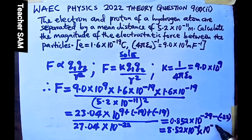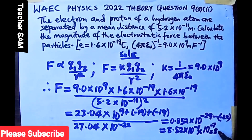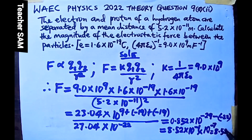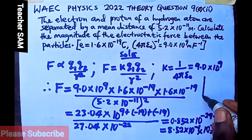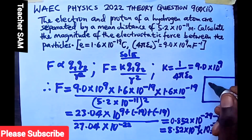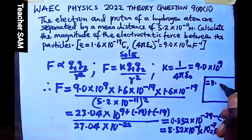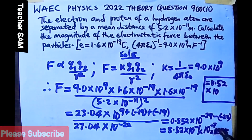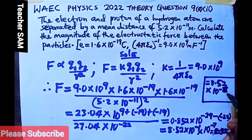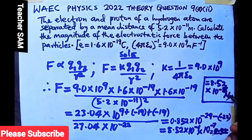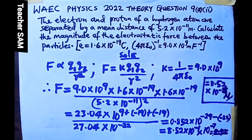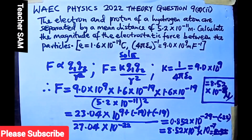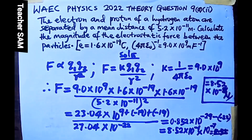So that is 10 raised to negative 8. The answer is 8.52 times 10 raised to negative 8. We are calculating force, so the unit is Newtons. Therefore the magnitude of the electrostatic force between the electron and proton is 8.52 times 10 raised to negative 8 Newtons.